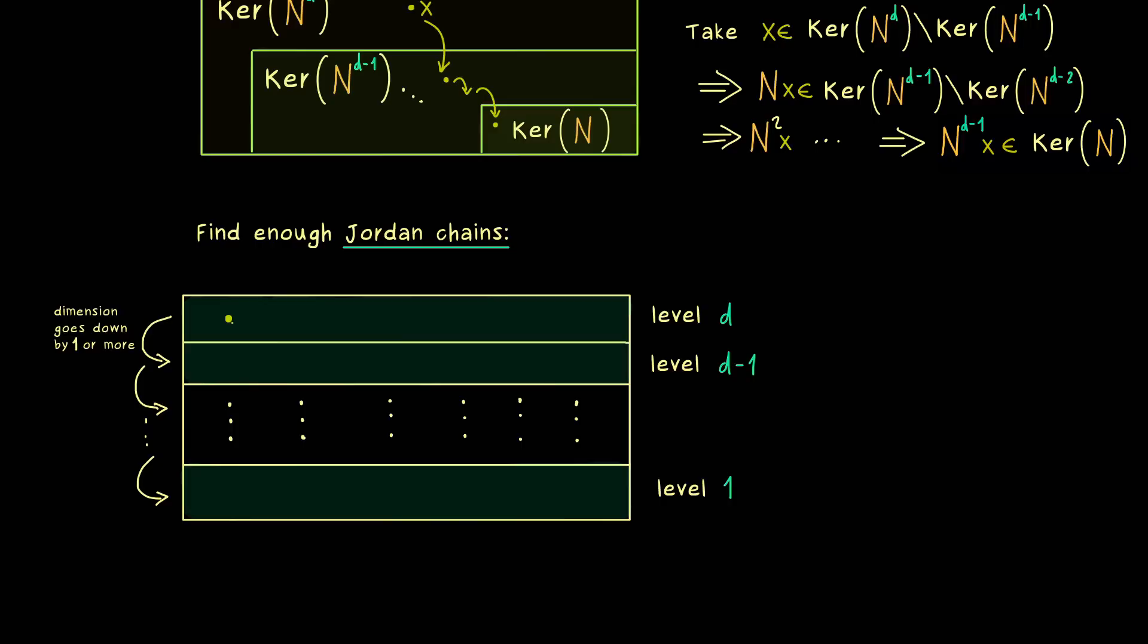For example, we can always start at the highest level and do exactly what we said before. So maybe let's call this vector x₁,d. And now we have learned, we can just construct the next one in the chain and let's call it x₁,d-1. And now we go down as before until we reach our last vector x₁,1. So this is one chain, which is always possible.